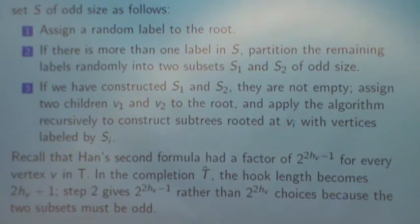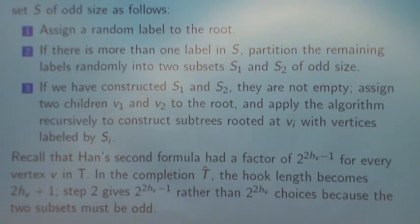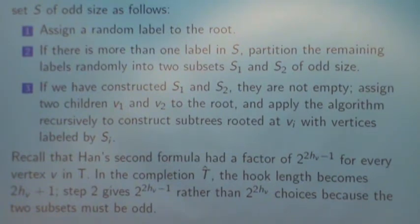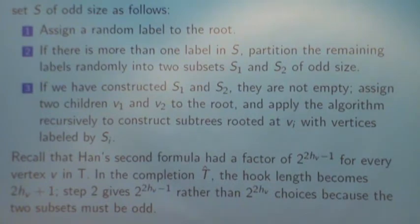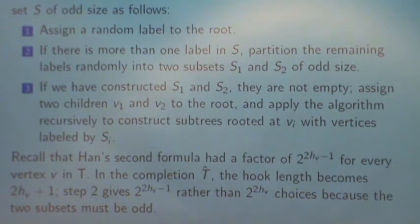So that explains where the missing factor came from. Han's second formula has the 2 to the 2Hv minus 1 for every vertex. Now, if we have a tree T, then its completion T-hat has hook length 2Hv plus 1. But we don't have 2 to the 2Hv choices because only half the partitions of a set of size 2Hv are both into odd parts.